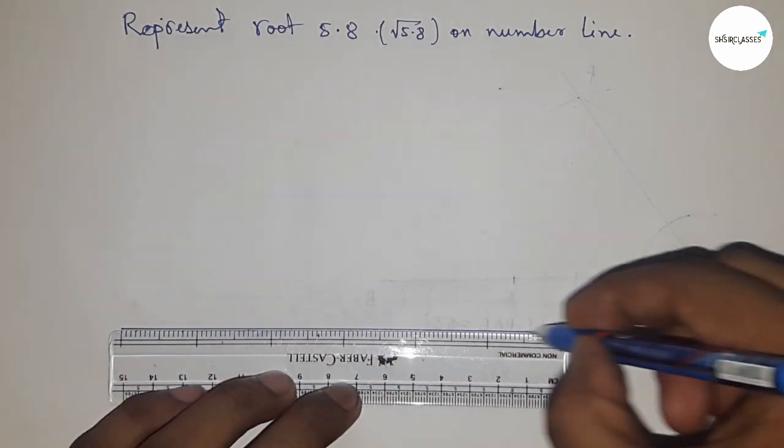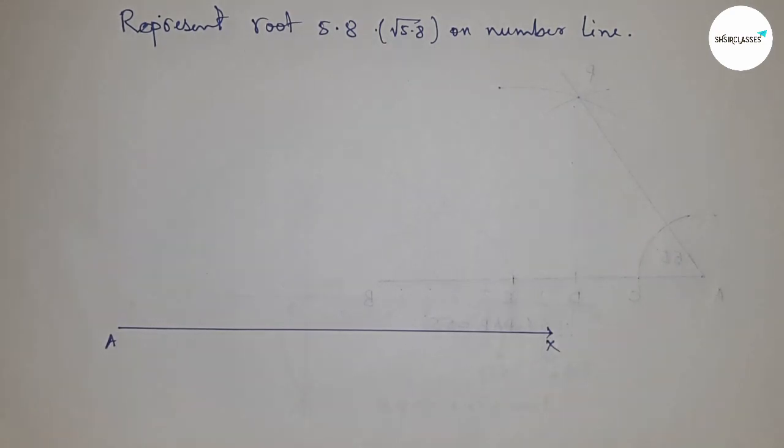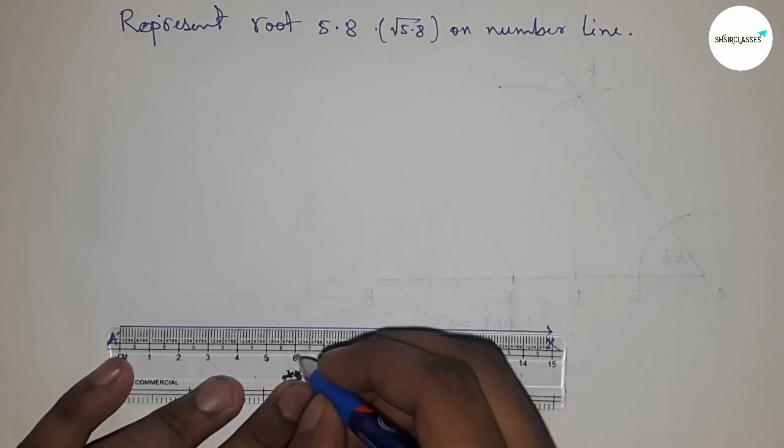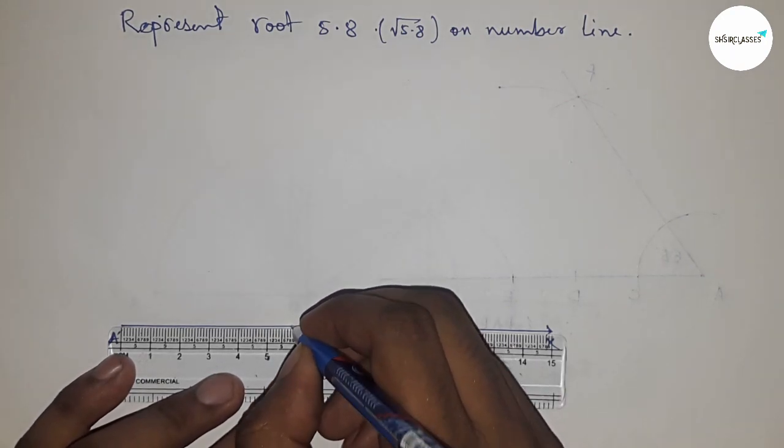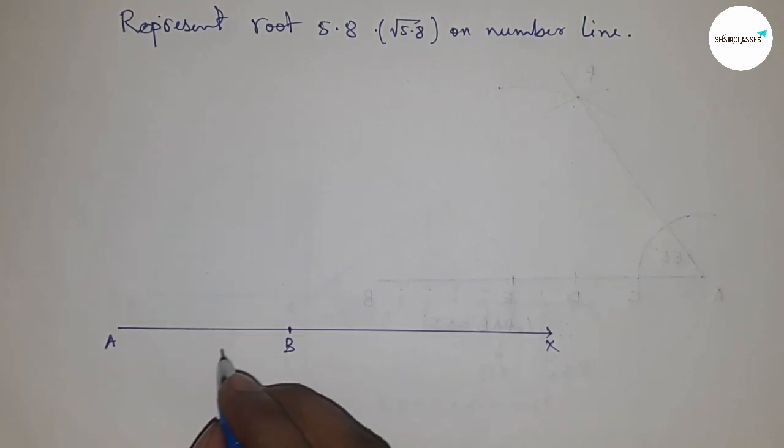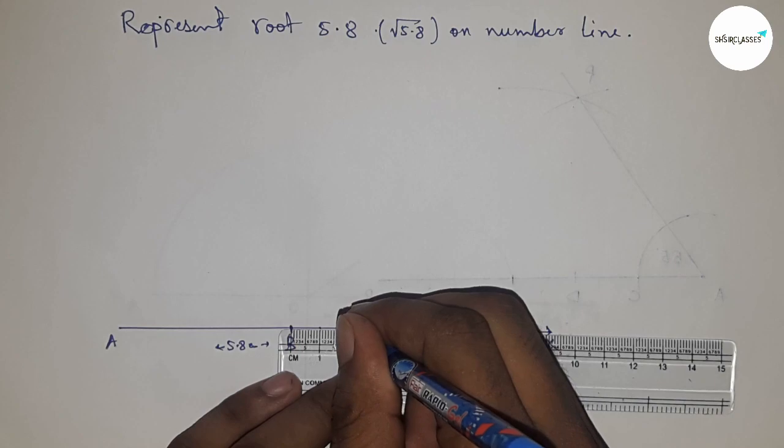First of all, draw a line of any length. This is the AX line. Next, take a length of 5.8 centimeters using a scale. This is 5.8 centimeters, and this is point B. So AB equals 5.8 centimeters.